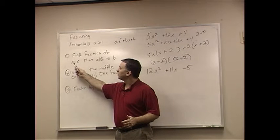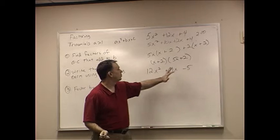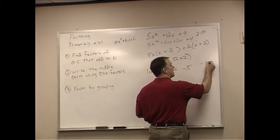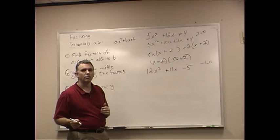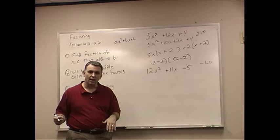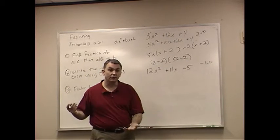Find factors of A times C that add to B. 12 times negative 5. Oh boy, that multiplies to be negative 60, doesn't it? I need factors of negative 60 that add up to be 11. Now, your numbers get to be a little bigger. I start listing.